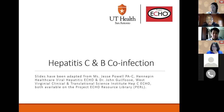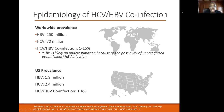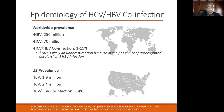The title of this talk is Hepatitis C and B Co-Infection. This slide goes over the epidemiology of hepatitis C and hepatitis B. The worldwide prevalence of hepatitis B monoinfection is 250 million people. Hepatitis C is 70 million. For those who have both hepatitis C and hepatitis B together, prevalence is 1 to 15 percent.